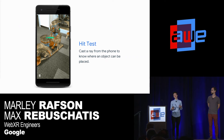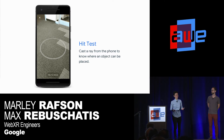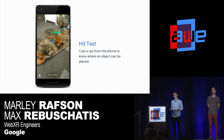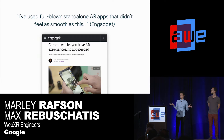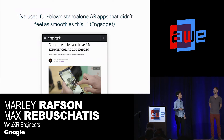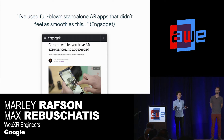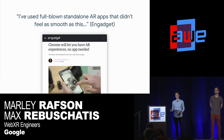At this point you should probably be thinking: the web sounds great, we should all develop augmented reality on the web. One of the common questions we get is: how's performance? I'll let Engadget answer that. I've used full-blown standalone AR apps that didn't feel as smooth as this. Our team cares so much about performance and we've been working on this problem for a long time. As a quick technical overview: there are three different render loops we have to deal with and synchronize — the JavaScript render loop, the native graphics render loop, and the camera's refresh rate. We tested which ways we want to synchronize and which one we want to lead, and we came up with a great solution — we're able to get extremely performant experiences on the web.